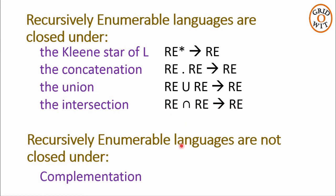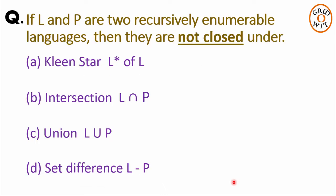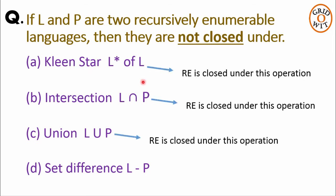Recursively enumerable languages are not closed under complementation — that is, the complement of a recursively enumerable language may not be recursively enumerable. So options A, B, and C cannot be the answer, because recursively enumerable languages are closed under those operations.